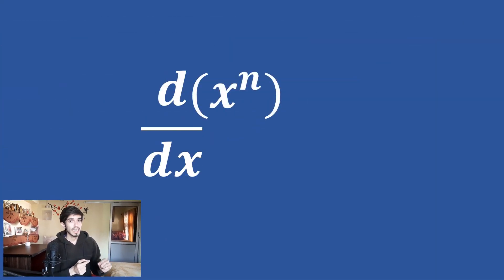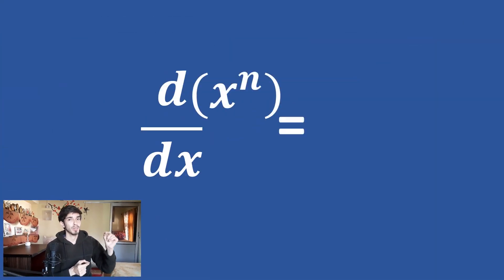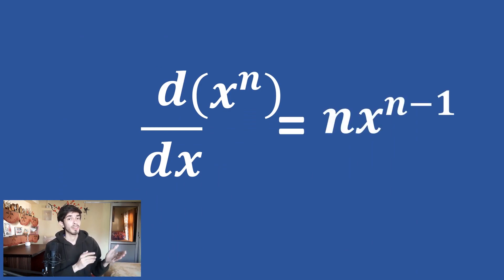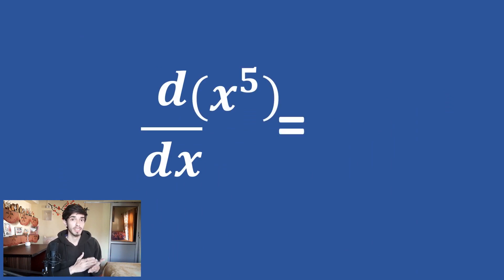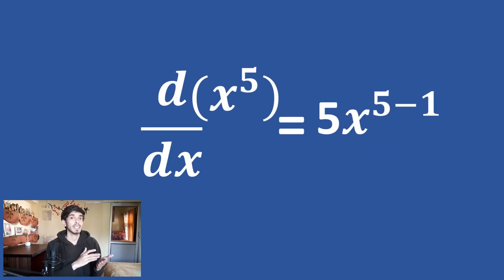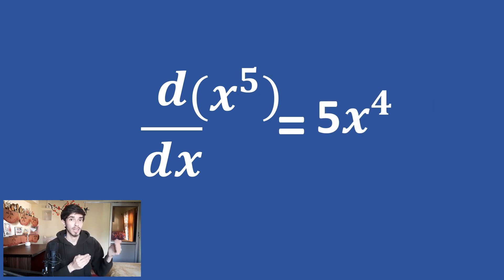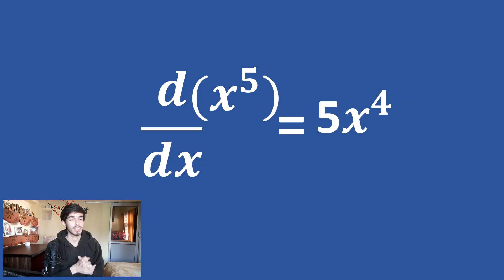Differentiation of x raised to the power n is n times x raised to the power n minus 1. For example, differentiation of x raised to the power 5 is 5 times x to the power 5 minus 1, which is 4. So differentiation of x raised to the power 5 is 5x raised to the power 4.